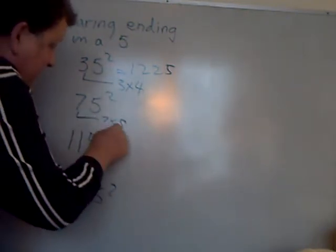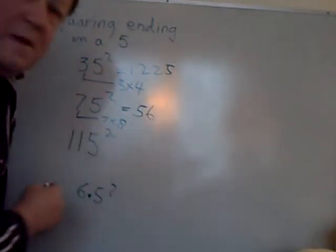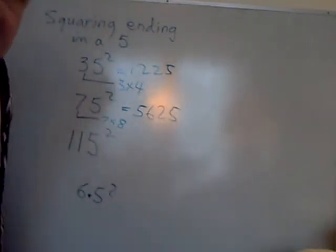So 7, the next highest number is 8. That gives you a 56. Then just attach 25. 5,625.